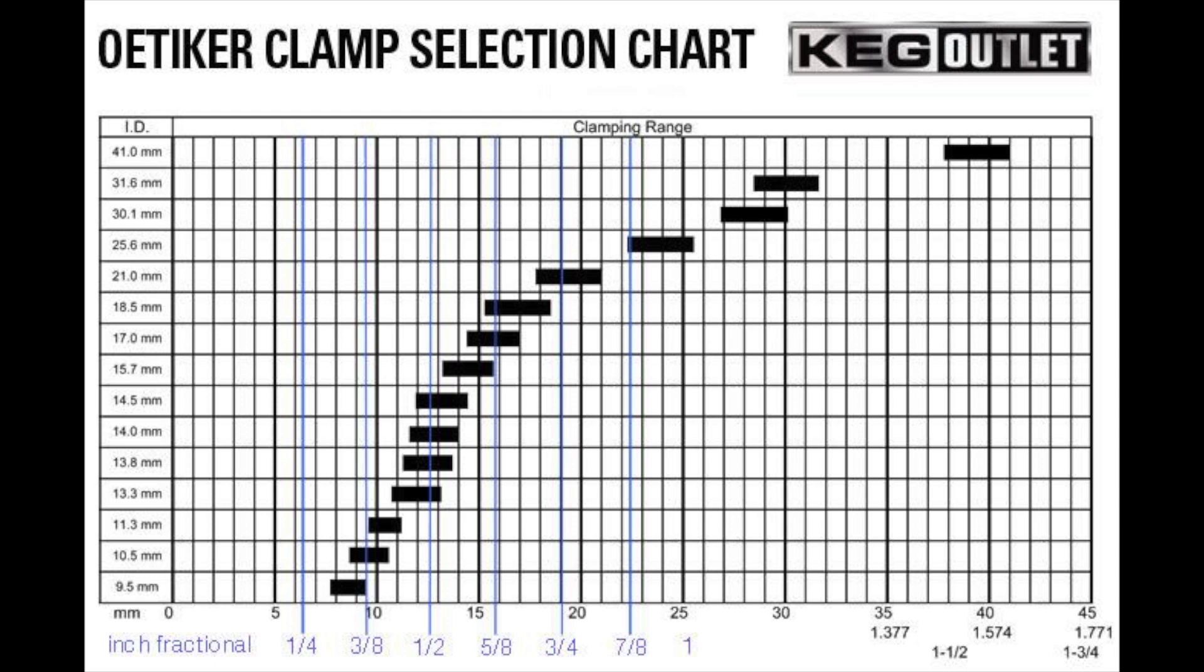For example, look at the 15.7 millimeter clamp. The right side of the bar will show you that it's 15.7 millimeters when open, while the left side will show you it will clamp to 13.2 millimeters when tightened.